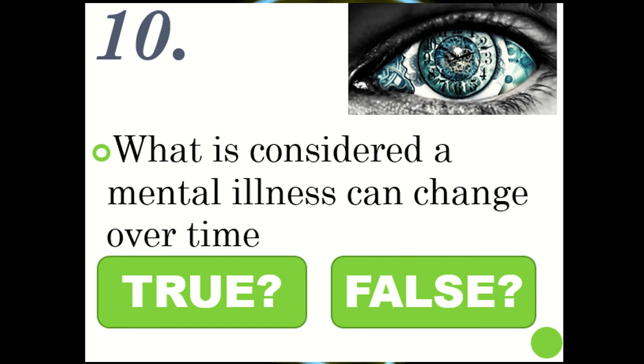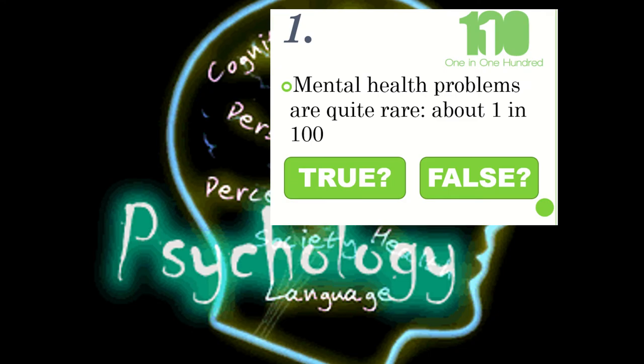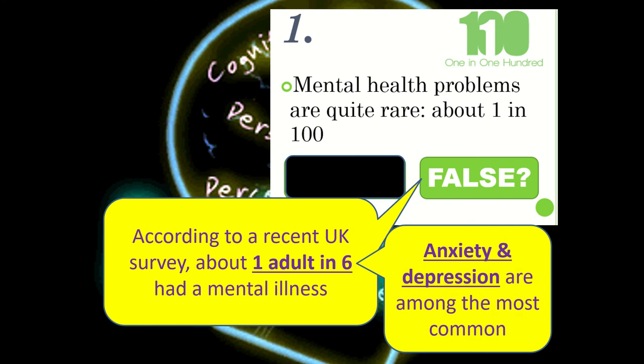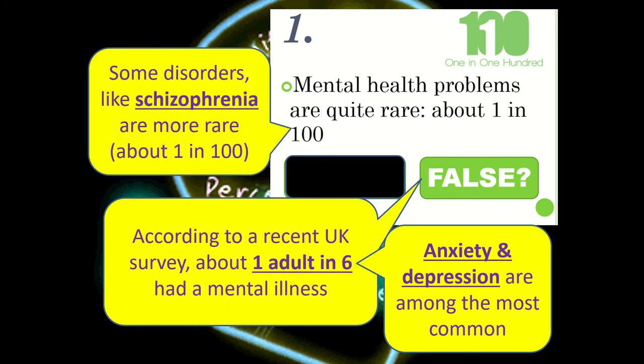You may want to rewind and have another quick look over those before I go through the answers now. Statement number one: mental health problems are quite rare, about one in one hundred. This statement is false. Mental health issues are much more commonly occurring in our society — approximately one in every six adults will be diagnosed with a mental illness at some point in their adult life, with depression and anxiety estimated to be as common as one in three nowadays. Some illnesses are quite rare, including schizophrenia, which occurs approximately one in one hundred.